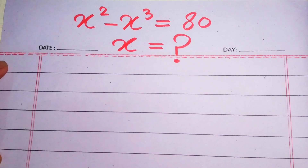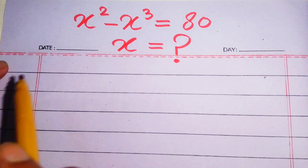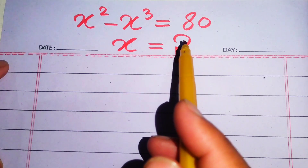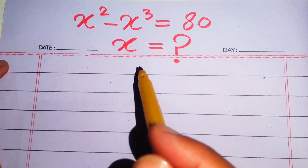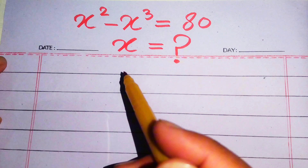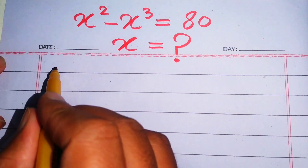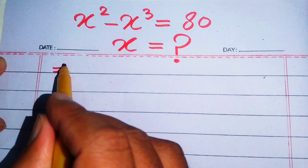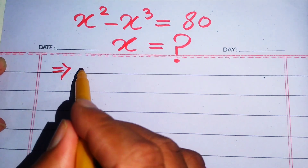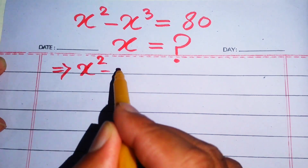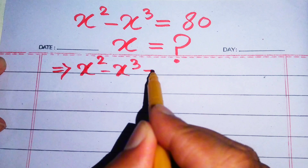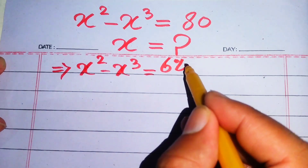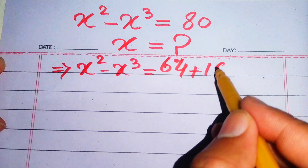Hello everyone, welcome. We are going to solve this math algebra problem. Here we have x squared minus x cubed equals 80, and we solve this problem for the values of x. The very first step we are going to do is focus on the right hand side and break the number 80.